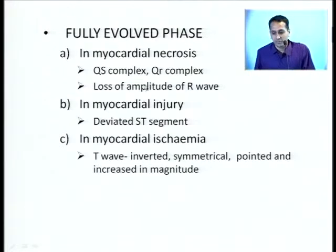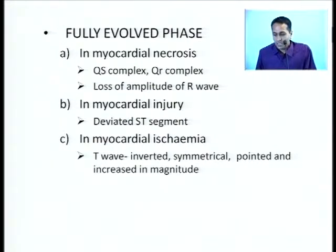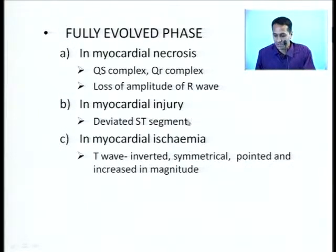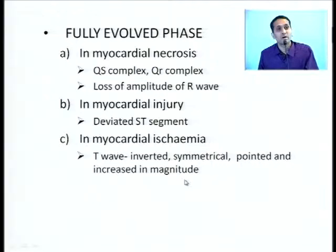In a fully evolved MI, you have an area of necrosis represented by the QS complexes. Whenever there is a full-fledged Q wave on the surface ECG, it means there is already some amount of Myocardial Necrosis. Whereas only when there is a deviated ST segment — either ST depression or elevation — you have a site of injury. And if there are only T wave changes, you are lucky because you may just get a symmetrically deep, pointed T wave inversion.